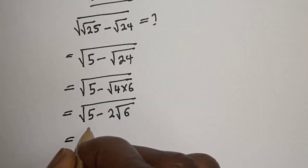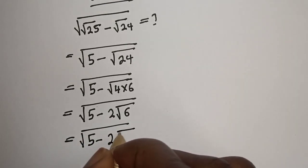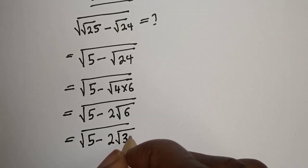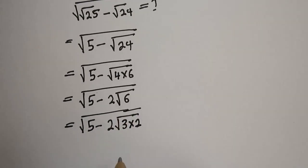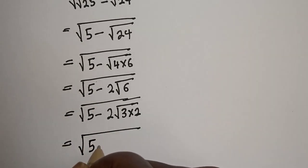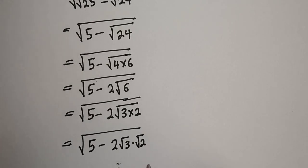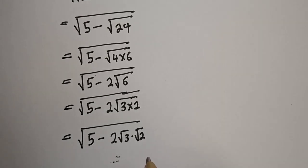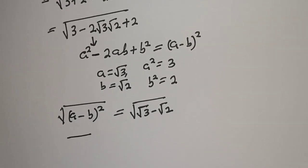Equal to square root of 5 minus 2 square root of — square root of 4 is 3 — multiplied by 2. So 5 minus 2 equals square root of 5 minus 2 root 3, multiplied by root 2, giving 5 minus 2.